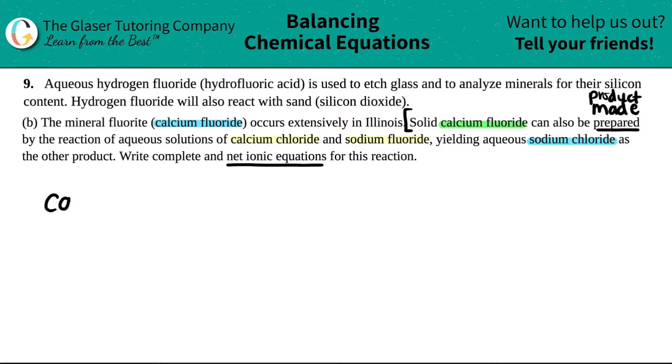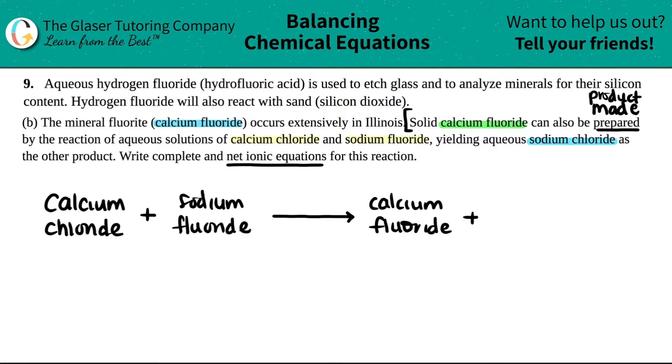So calcium fluoride is going to be a product by the reaction of aqueous solutions of calcium chloride and sodium fluoride. Once I combine these two compounds together, I will make calcium fluoride and I will yield aqueous sodium chloride as the other product. So there are your two products, calcium fluoride and sodium chloride. These are your reactants.